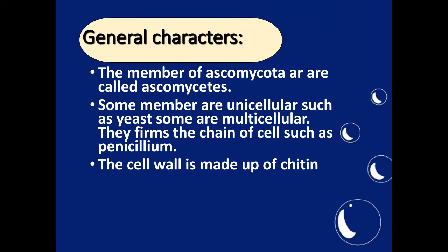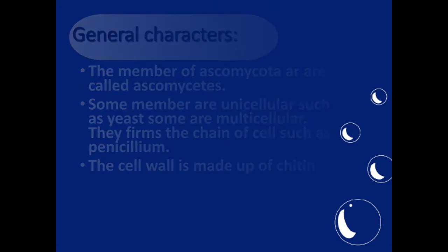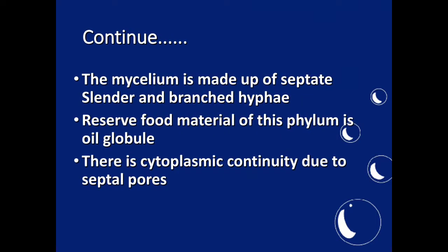General characters: The members of Ascomycota are called ascomycetes. Some members are unicellular, such as yeast. Some are multicellular — they form chains of cells, such as Penicillium. The cell wall is made up of chitin. The mycelium is made up of septate, cylindrical, and branched hyphae. The reserved food material of this phylum is oil globules. There is cytoplasmic continuity due to the septal pores.